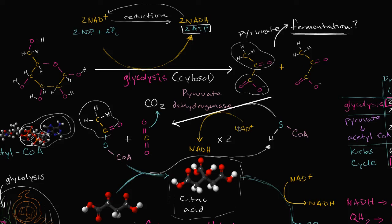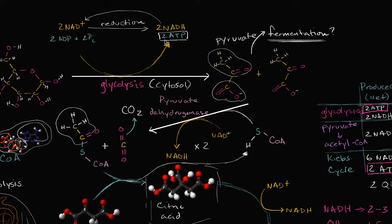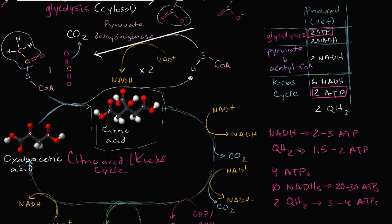When we looked at glycolysis and the conversion of pyruvate to acetyl-CoA and then the Krebs or the citric acid cycle, we were sometimes directly producing ATPs, but we were also doing a lot of reduction of NAD to NADH. And we later said that that NADH can later be oxidized, and that energy from that oxidation, that energy released from the electrons, can be used to actually create ATP. NADH is the main character here, but there are other coenzymes involved, like coenzyme Q. What I want to talk about in this video is the process by which we actually produce ATP from the oxidation of these coenzymes.